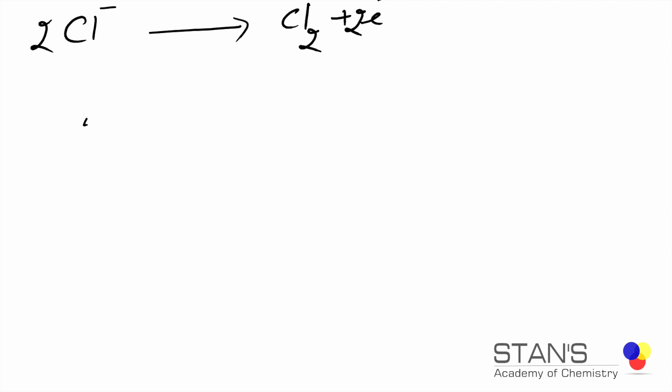So the number of moles of electrons that we have equals 0.0622 moles. Therefore, the number of moles of chlorine gas, Cl2 gas, will be half of that: 0.0622 times one by two, because every mole of electron equals one mole of chlorine atoms that releases half a mole of chlorine gas.